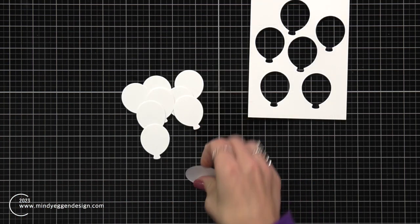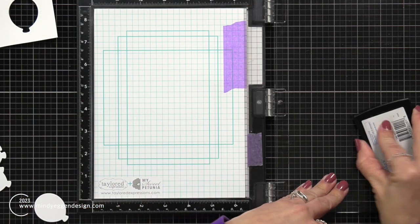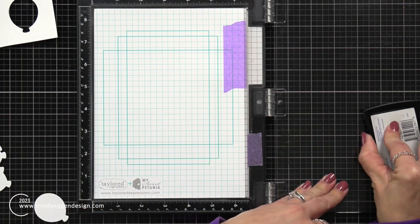Now you want to save your negative piece because we're going to be using that. I'm bringing out my Misti tool which is going to be crucial in this stamping trick that I'm going to show you.